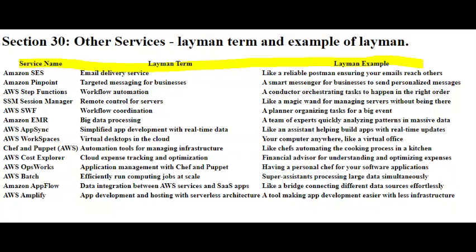Amazon AppFlow — Data Integration between AWS Services and SaaS Apps. It acts like a bridge, connecting different data sources effortlessly to ensure smooth data flow.